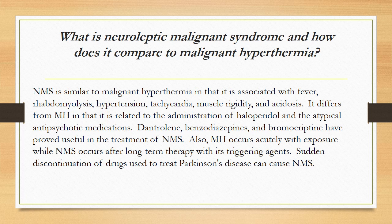What is neuroleptic malignant syndrome and how does it compare to malignant hyperthermia? Neuroleptic malignant syndrome is similar to malignant hyperthermia in that it is associated with fever, rhabdomyolysis, hypertension, tachycardia, muscle rigidity, and acidosis. It differs in that it is related to the administration of haloperidol and atypical antipsychotic medications. Dantrolene, benzodiazepines, and bromocriptine have proved useful in its treatment. Malignant hyperthermia occurs acutely with exposure, while neuroleptic malignant syndrome occurs after long-term therapy. Sudden discontinuation of drugs used to treat Parkinson's disease can also cause neuroleptic malignant syndrome.